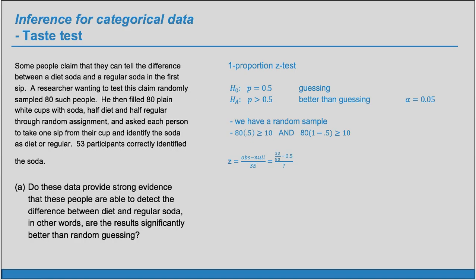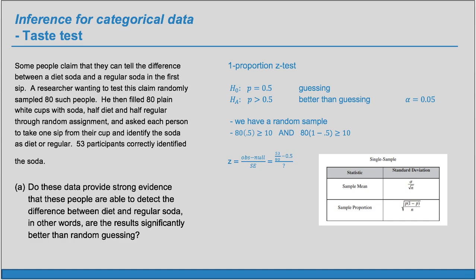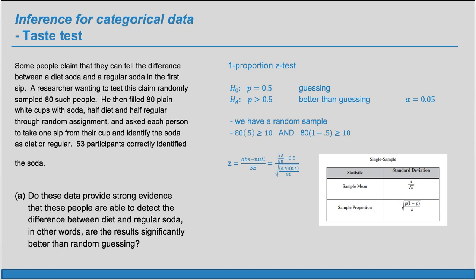So we have our P hat is 53 over 80 minus the null value. That's this value here, the 0.5. And now put it over the SE. If we forget the structure for the SE, we can always grab a formula sheet. So it's going to be square root of P1 minus P over N, because this is a single sample and a proportion. And so just as we use the hypothesized P of 0.5 when we checked our conditions, similarly, we're going to use that same value down here, because we are hypothesizing that P is 0.5. We're going to assume this is true for the purpose of our calculations and see what happens. So plug in the 0.5 there.